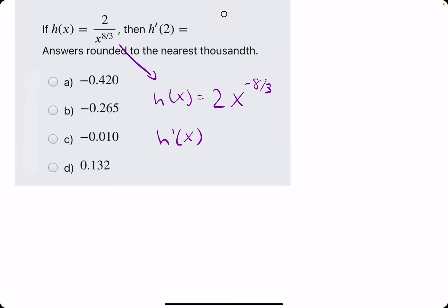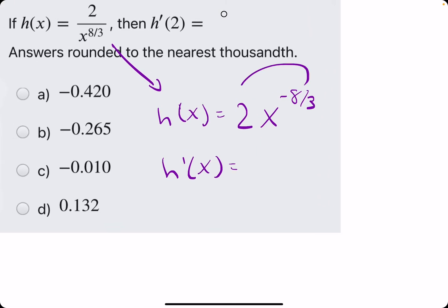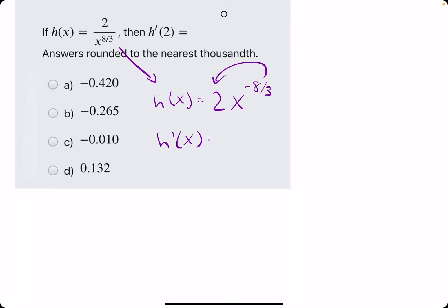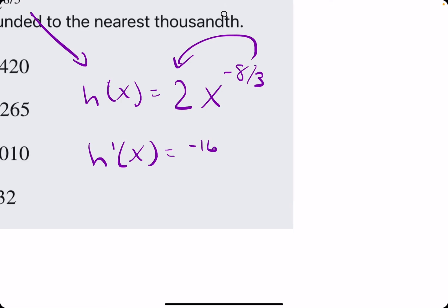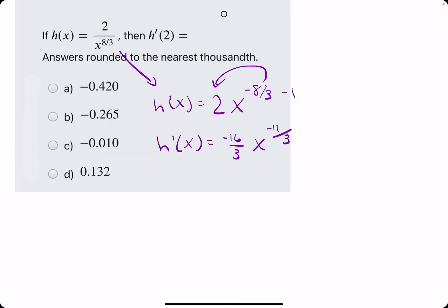Now we can take its derivative by bringing out negative 8/3, multiplying by 2. Basically 2 times negative 8 on top would give us negative 16. And on the bottom, we'd be left with the 3. We leave the x and we subtract 1 from negative 8/3. So negative 8 minus 3, top minus bottom, would give us negative 11. And then we keep that over 3.